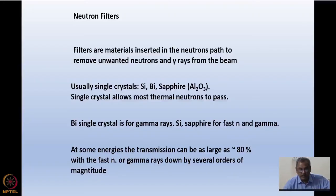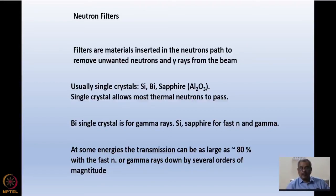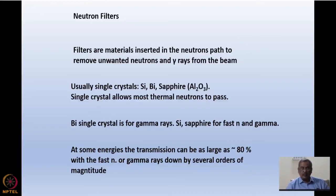At some energies, the transmission has been measured to be as good as 80%, with fast neutrons and gamma rays cut down by several orders of magnitude. So the desirable thermal neutrons will pass through at 80% transmission and we will have a rather clean beam after the filter.